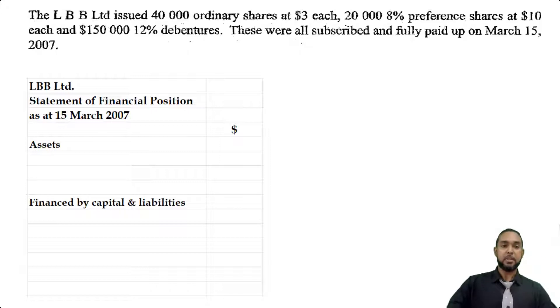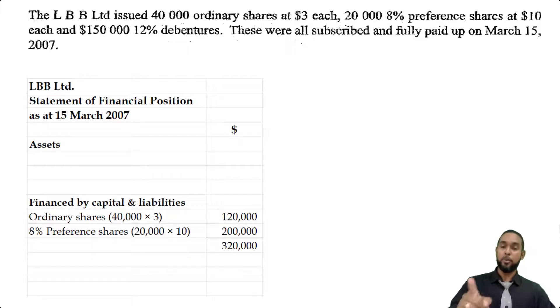The first thing was 40,000 ordinary shares at three dollars each. So 40,000 by 3 is 120,000. And then we had 20,000 8% preference shares at ten dollars each. Now the 8% is the dividend rate on the preference shares and that comes into play when we're paying dividends. We are issuing shares, so the 8% is not relevant. You're just multiplying 20,000 by ten dollars, which gives us 200,000. So our total share capital will be 320,000.